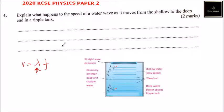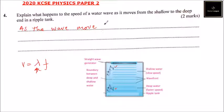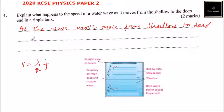So with that, you can be able to answer this question. You can say: as the wave moves from shallow to deep end of the ripple tank, the wavelength increases.